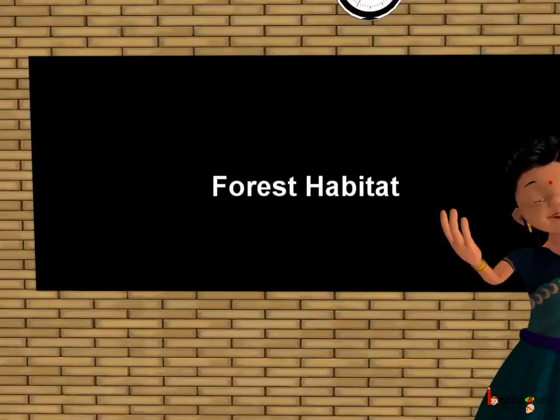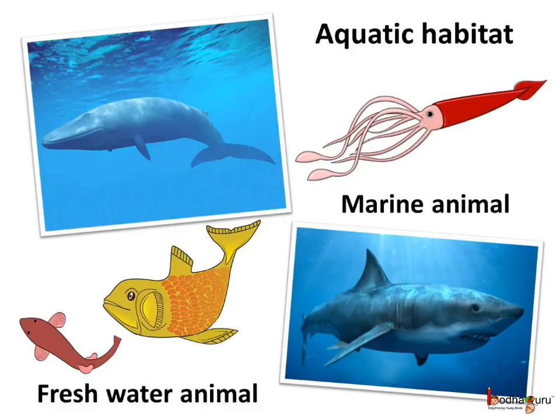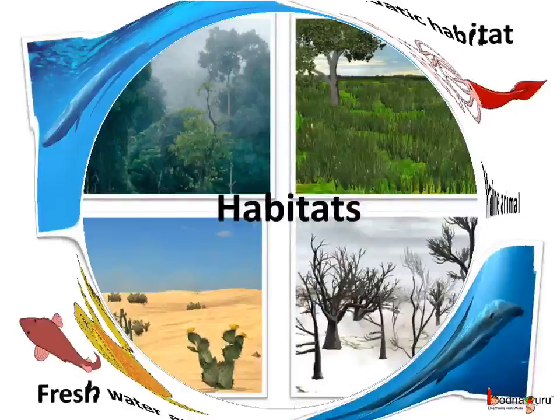Good morning children. Today we shall learn about different types of forest and the life existing there. We have already learnt about the aquatic habitat. Aquatic habitat consists of the marine habitat — that is the sea, ocean — and also the freshwater habitat, that is the lake, ponds, rivers etc. Most of the creatures on the earth live in the aquatic habitat, but the diversity of life in the terrestrial or the land habitat is vast too.